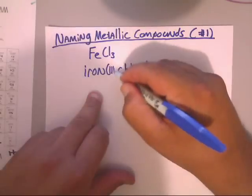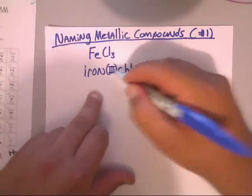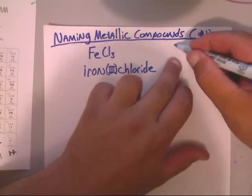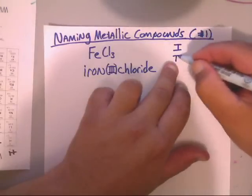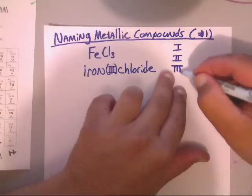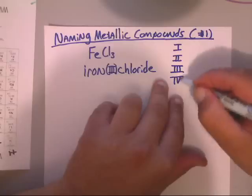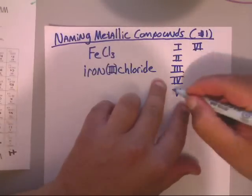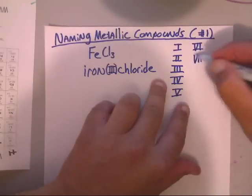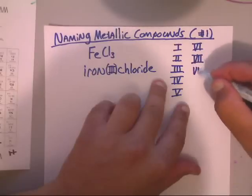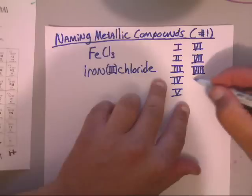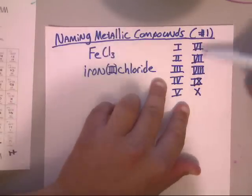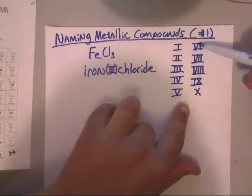Now I can see how that's confusing because of the Roman numerals. If you don't remember your Roman numerals: one is I, two is II, three is III, four is IV, five is V, six is VI, seven is VII, eight is VIII, nine is IX, and ten is X.